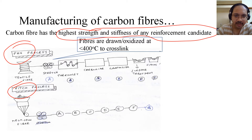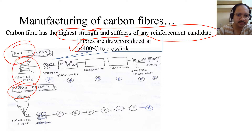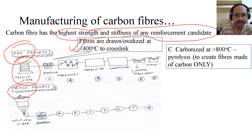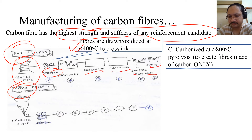Starting with PAN: the fibers are drawn and oxidized at a temperature close to 400 degrees Celsius to cross-link — this is a textile fiber stage. Once stretched, it is passed through a thermoset bath, then carbonized, then graphitized, followed by surface treatment and sizing.